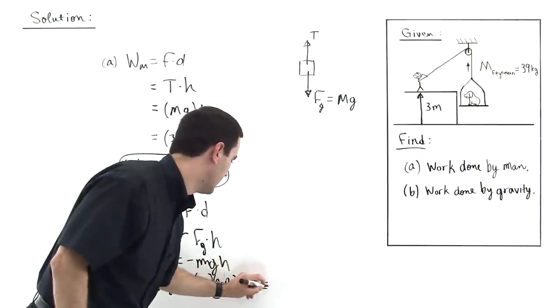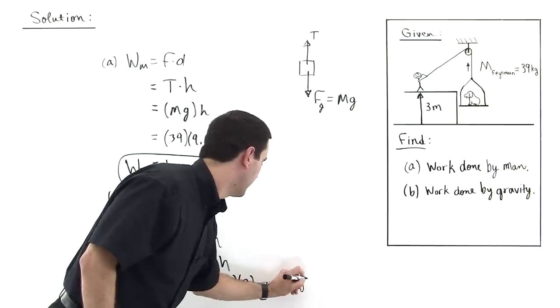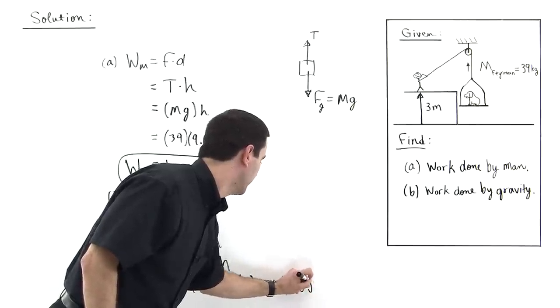And that is the height that you're looking for to insert into the equation. And of course, this is equal to negative 1,148 joules.